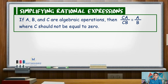Generally, we say that if A, B, and C are algebraic expressions, then C times A over C times B is equal to A over B, where C should not be equal to zero. This means that a rational expression is in simplified or reduced form if its numerator and denominator have no common factors other than 1.